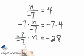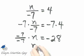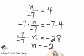Now negative 7 divided by negative 7, that is 1, and 1 times n is simply n. So we have that n is equal to negative 28.